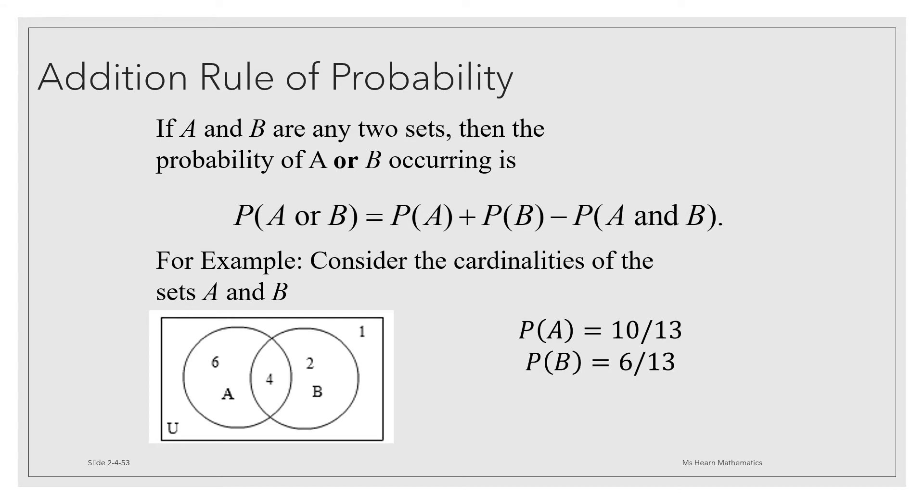So the probability of drawing a name from family A would be 10 out of the 13 elements in the universal set or in the hat. The probability of B would be 6 out of 13. The probability of A and B both happening would be 4 out of 13. So the probability of A or B would be 10 thirteenths plus 6 thirteenths minus the overlap of 4 thirteenths, which would add up to 12 thirteenths, which makes sense because altogether there were 12 people in the families of A and B and only one person that was in neither family.